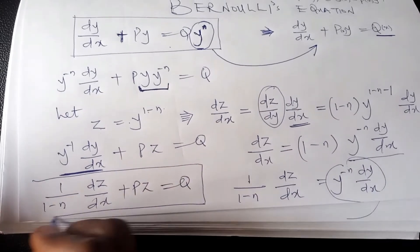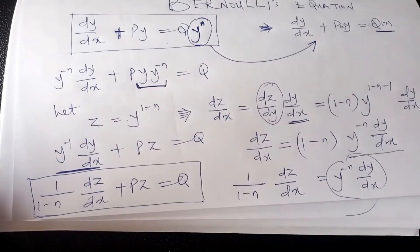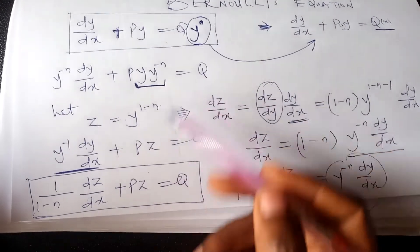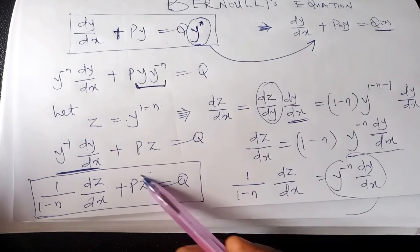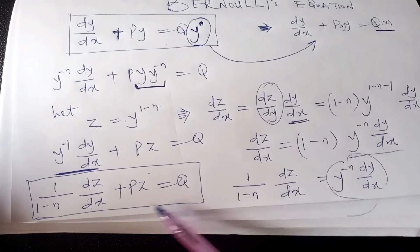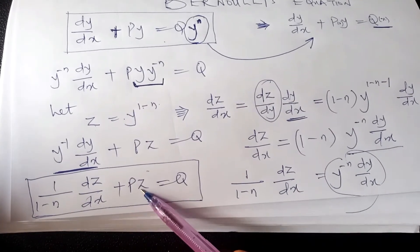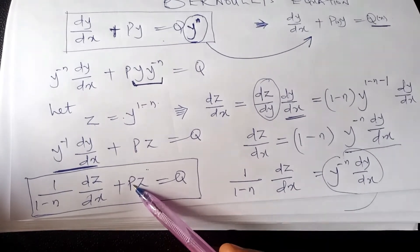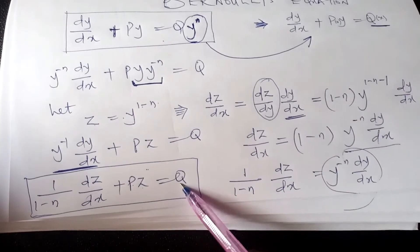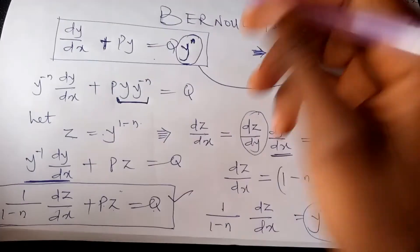Substituting back into the equation gives: 1 over (1 minus n) times dz/dx plus P(x) times z equals Q(x). This is now a linear equation in z. We have successfully reduced the Bernoulli equation to a linear equation by changing the dependent variable from y to z.